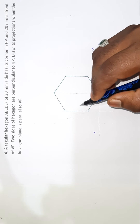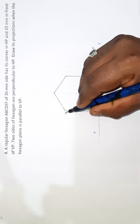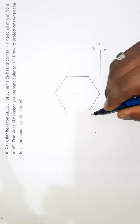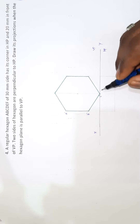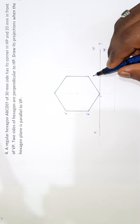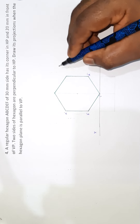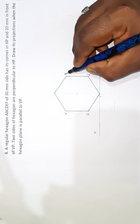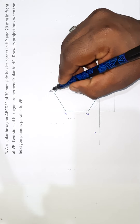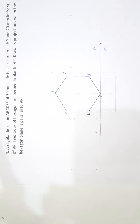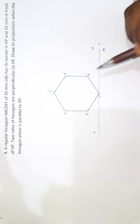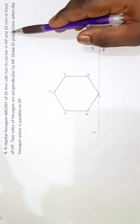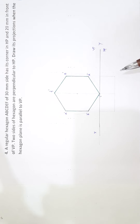Name the front view points: A', B', C', D', E', F'. Mark them. Next, you'll connect the corners of the front view.